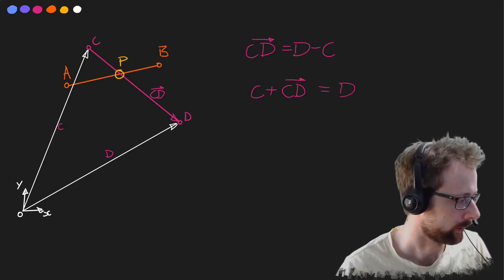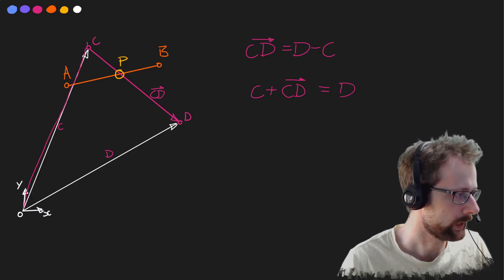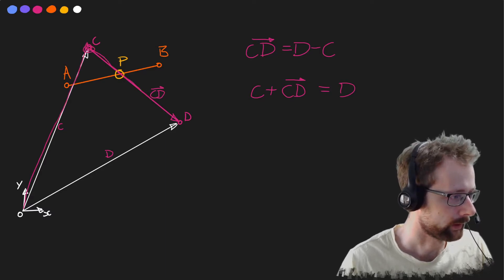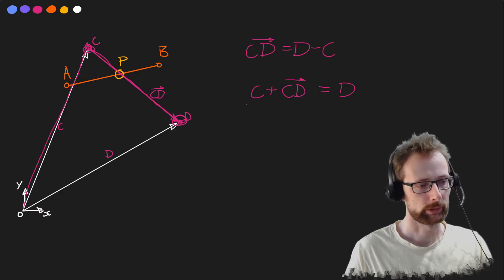So I can draw that out. If we go from 0 to c and we add the vector cd we end up at d. There we go.